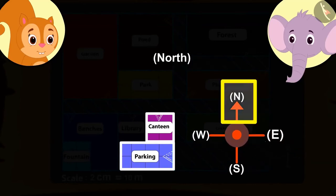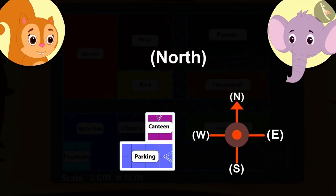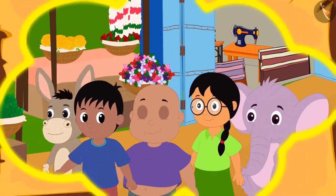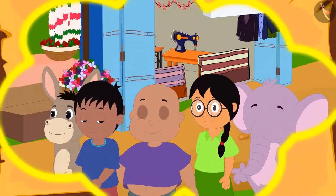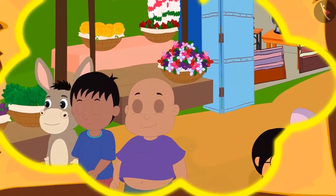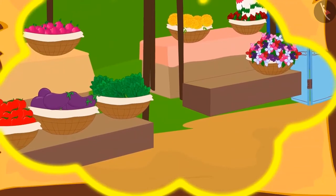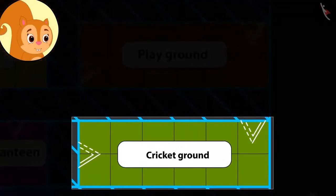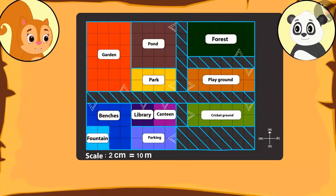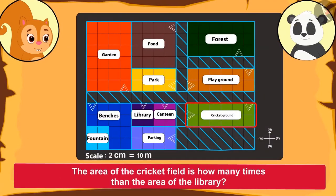Absolutely correct — towards the north. Kids, can you see the compass on the map? Everyone walked towards the north and reached the canteen where they had some delicious food. Some went towards the cricket ground and some came to the library to check out the exhibition. Chanda was surprised to see the cricket ground on the map and told Golu how the library looked much smaller. Can he tell her how many times the area of the cricket ground is compared to the library?